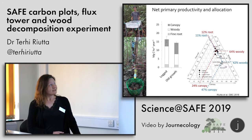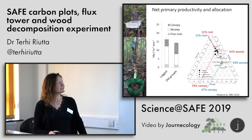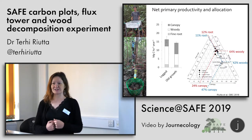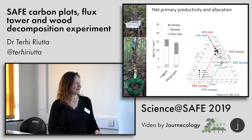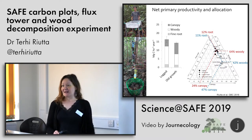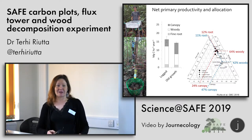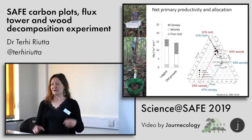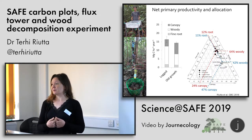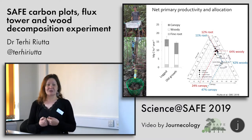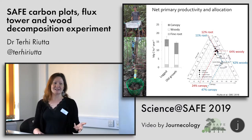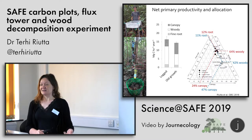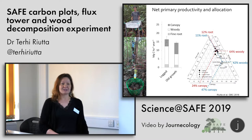Focusing on carbon dynamics: this shows net productivity and its allocation. Productivity is quite similar in logged and old-growth forests, but only if you look at total productivity, because there is a very clear allocation shift. In logged forest, much more is allocated to woody components at the expense of canopy. This has a practical implication — if you only measure tree diameters, you will conclude that logged forest is more productive, but that turns out not to be the case because the higher woody productivity comes at the expense of canopy productivity. Allocation to woody growth is not necessarily a good proxy for net primary productivity.